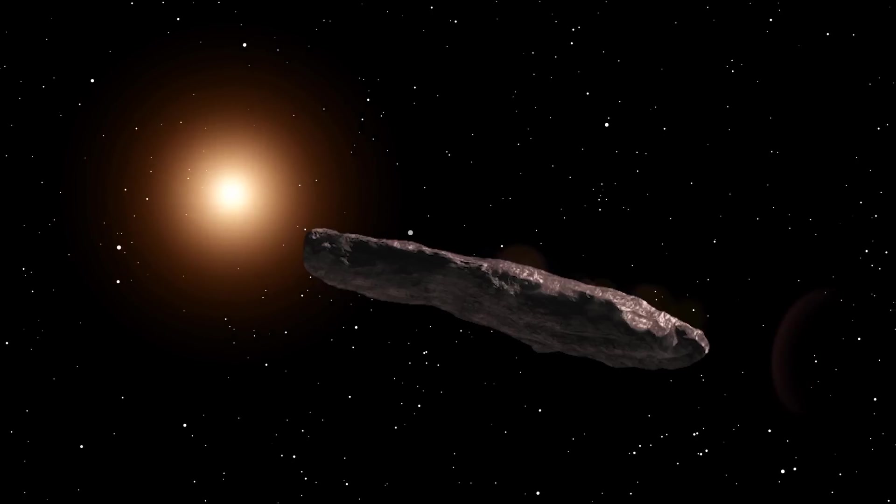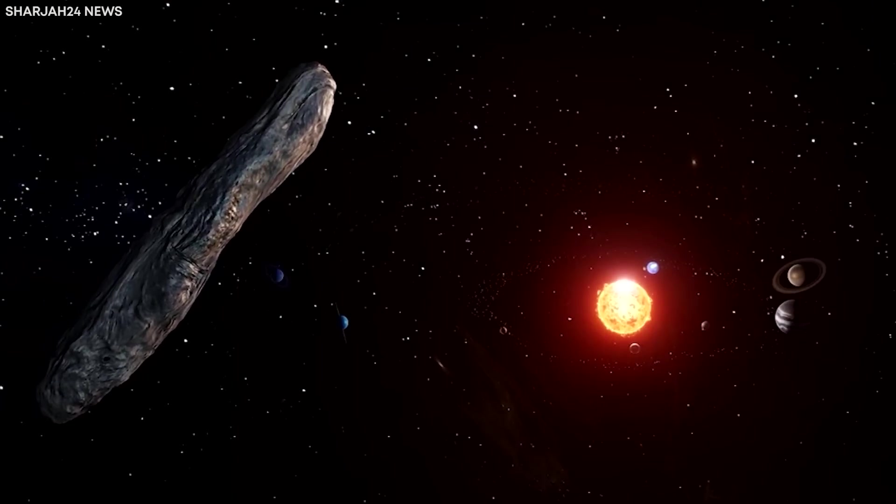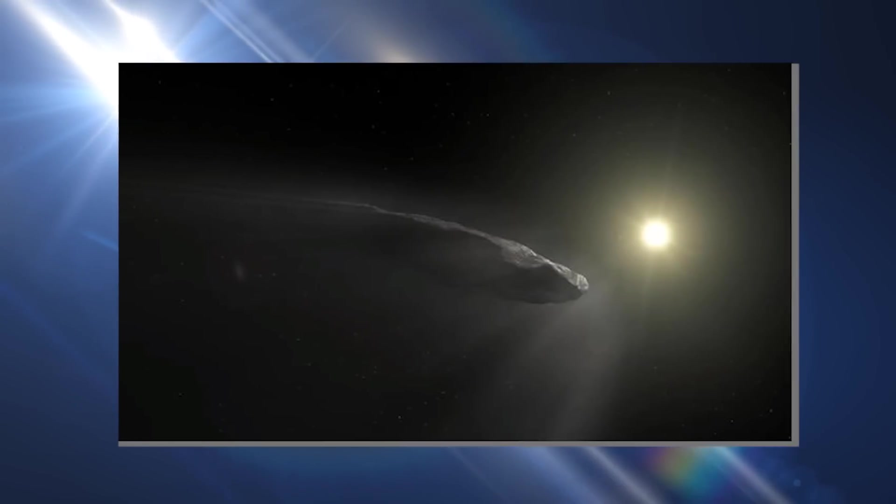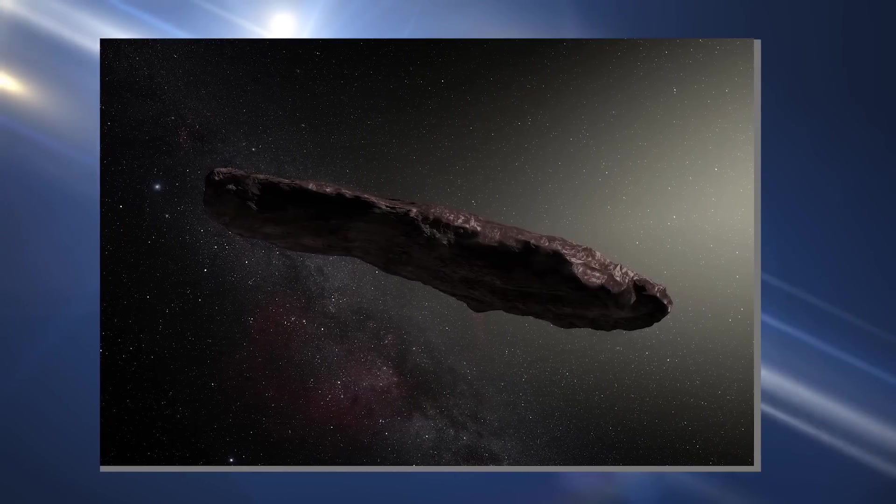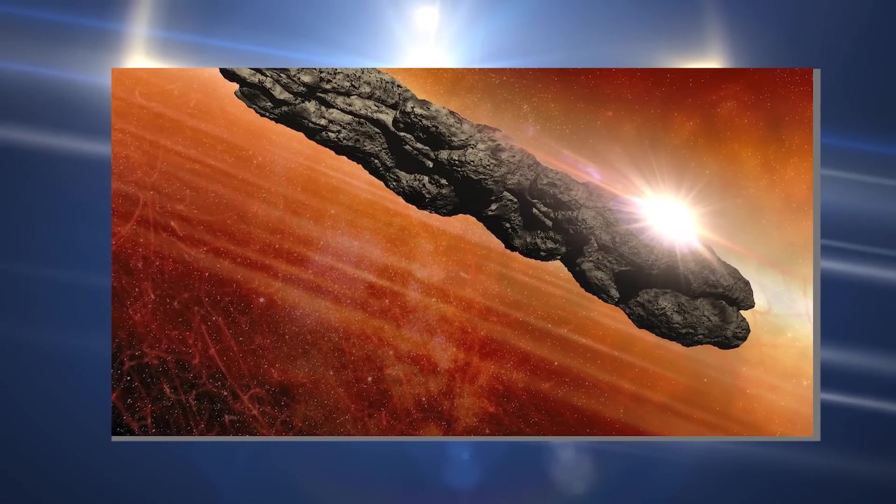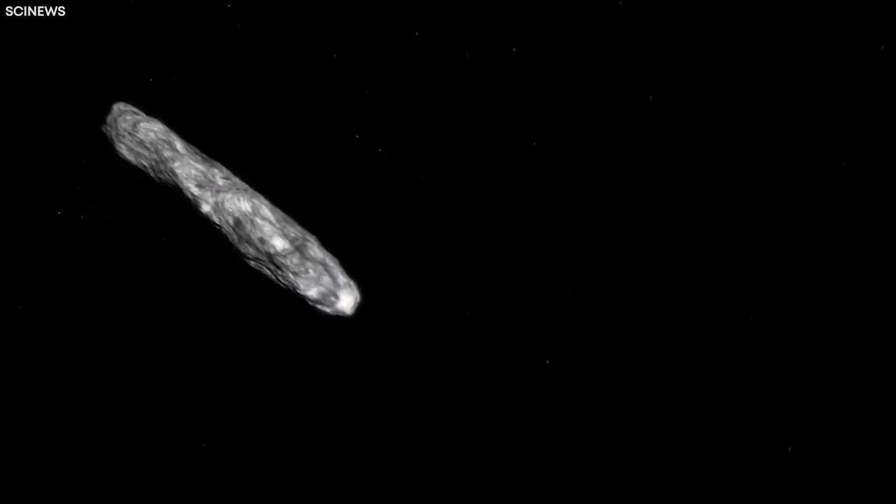Based on its brightness variations, Oumuamua seem to have an elongated and irregularly shaped structure, which is described to be that of a cigar or a pancake, with a length to width ratio of about 6 to 1. This is the very beginning of its uniqueness, as many other mysterious features of the Oumuamua lies underway.